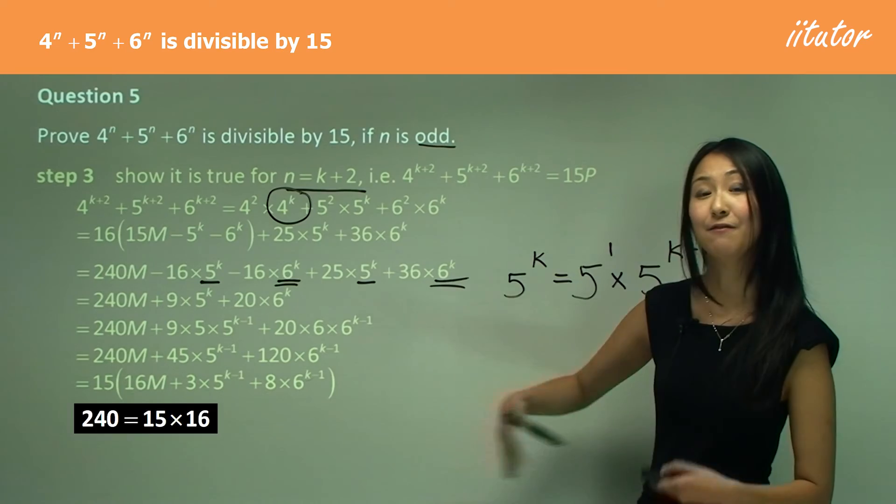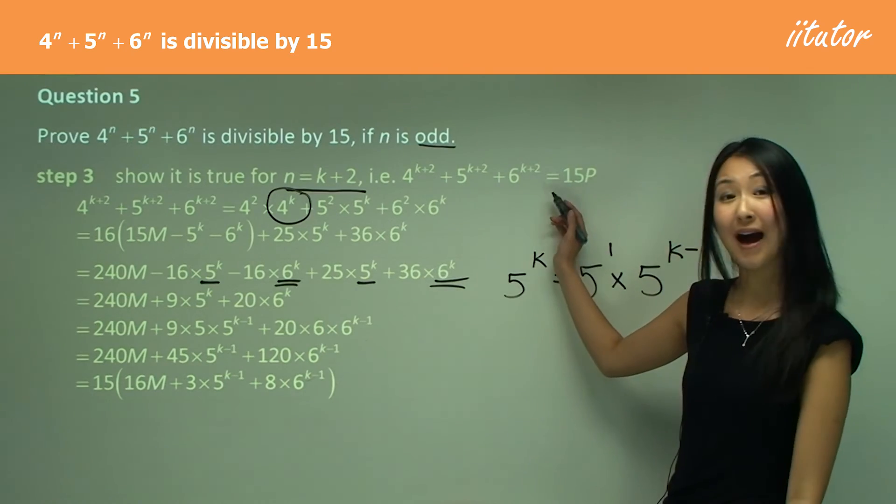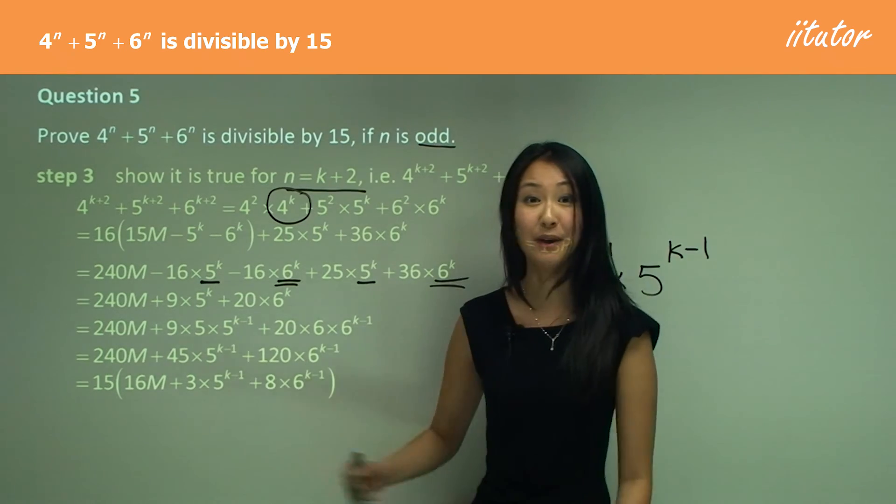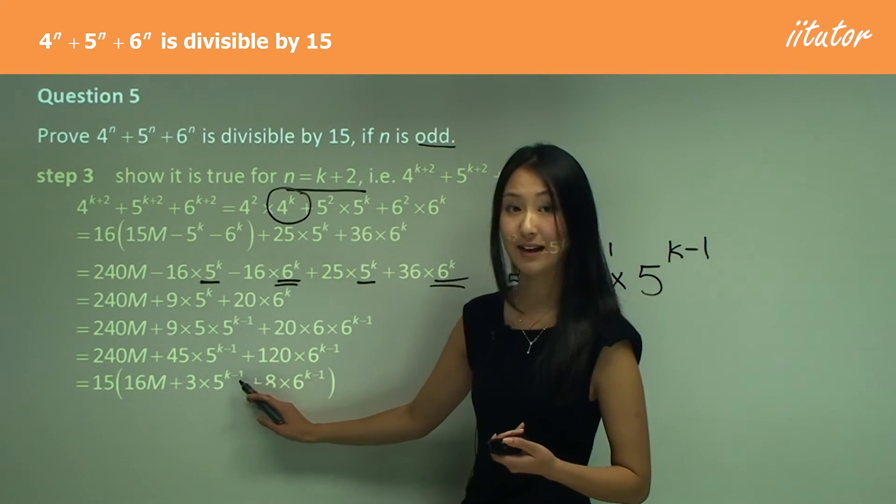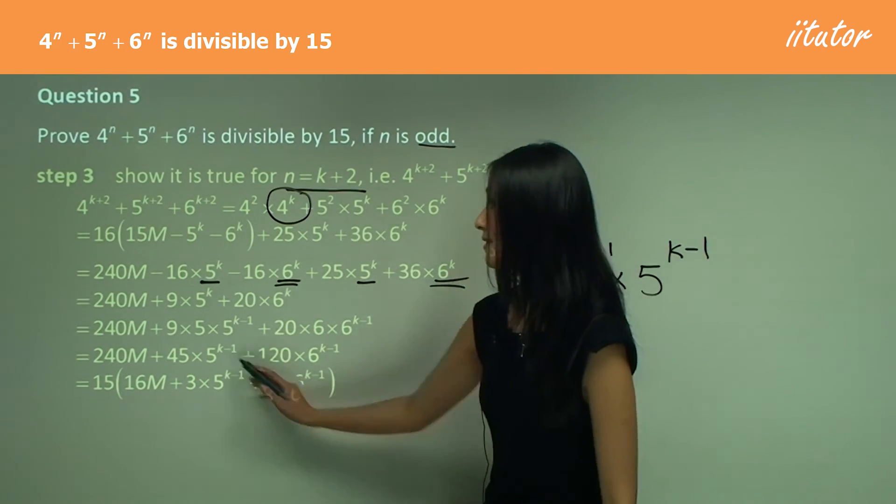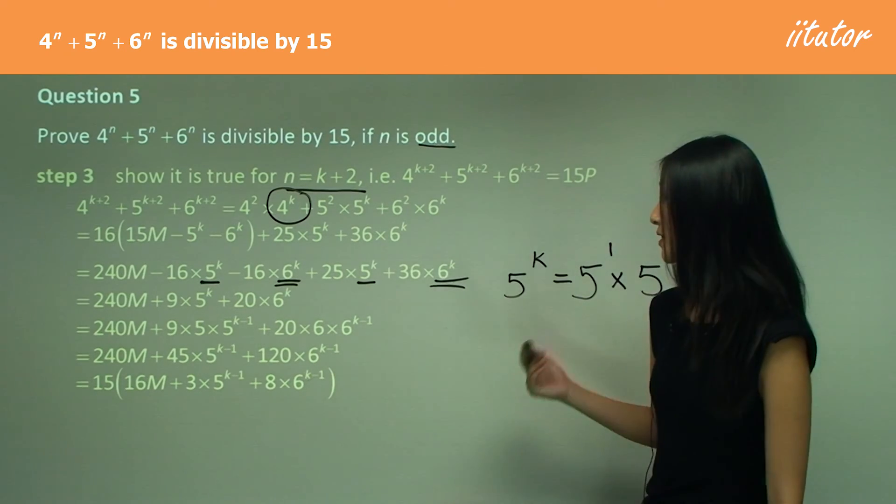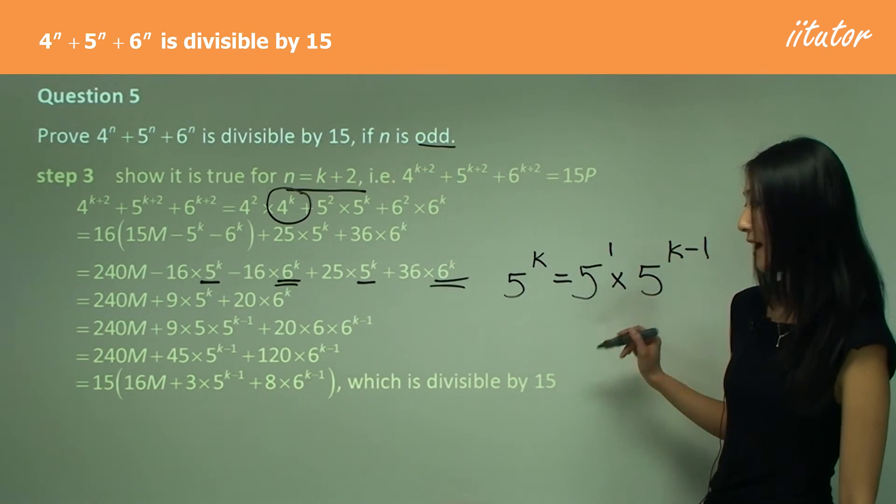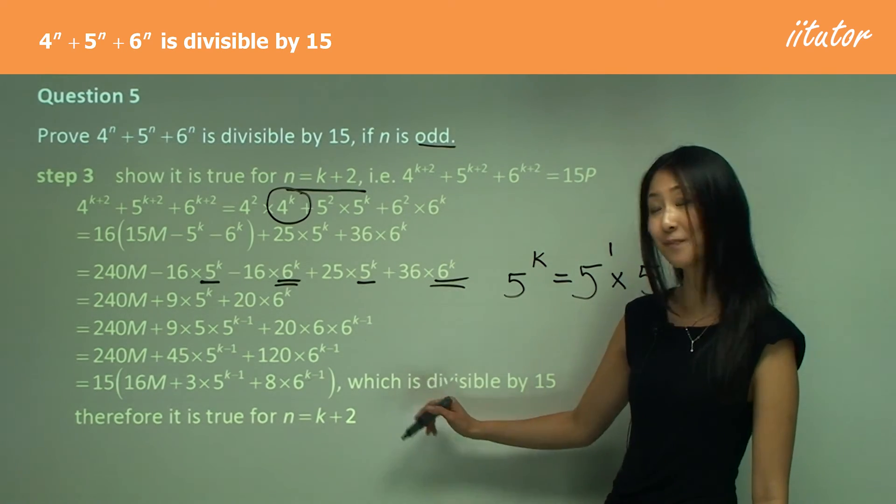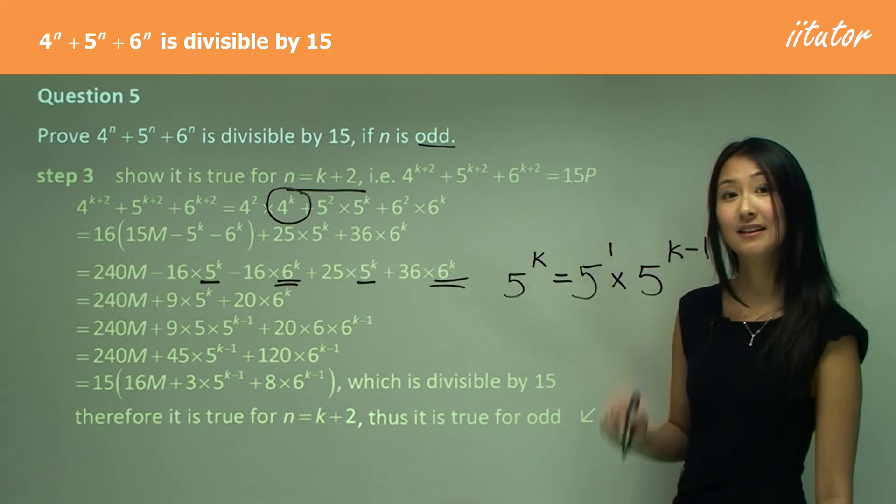Sometimes if you can't take out 15 yet, you have to take out another 5 and see if that can be divisible by 15. We need to check that this is going to be an integer. Even though it's minus 1, the smallest value that k can be is 1. That means the smallest value that whole thing can be is 0. So this will still be 3 times 1 plus 8 times 1. This would definitely be an integer. Therefore this is divisible by 15. Therefore it is true for n equals k plus 2. In conclusion, thus it is true for all odd numbers for this equation.